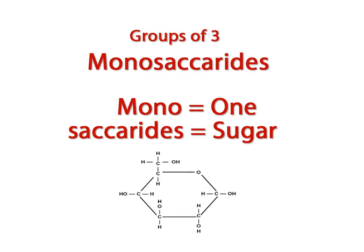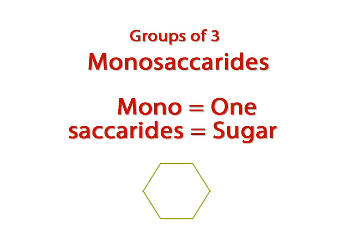Here is a simplified diagram that represents a six-carbon ring. For the purpose of this course, you will identify this diagram as a monosaccharide.